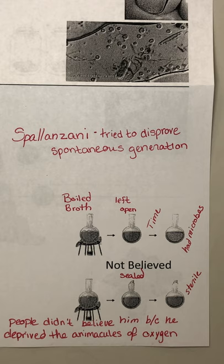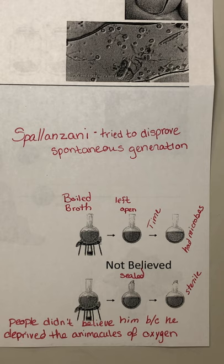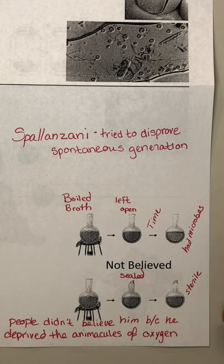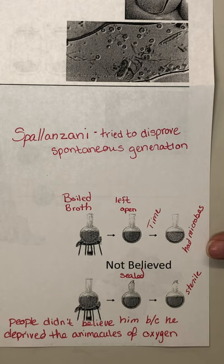Unfortunately, Spallanzani was laughed at because people didn't believe him — he was one of the first to run these experiments. They claimed he had killed all the animacules by depriving them of oxygen, since people believed animacules had to have oxygen to live. So they said he found nothing in the sterile broth only because he deprived them of oxygen. That's one of the starting experiments toward disproving spontaneous generation, and that's where we ended today. We'll come back tomorrow and look at more experiments that led to what we now know as pasteurization.